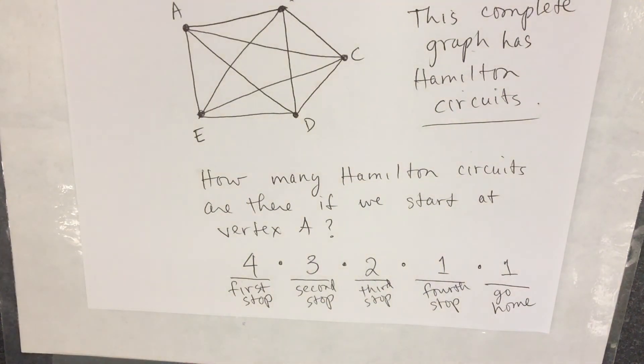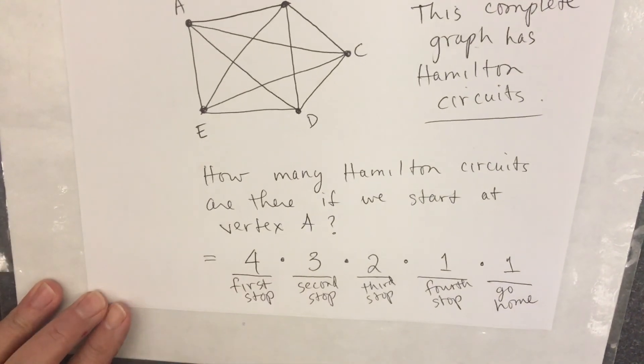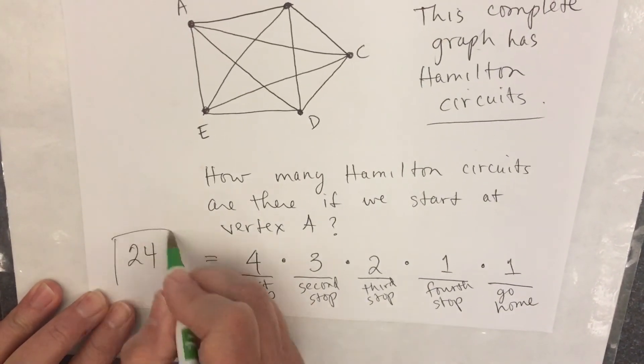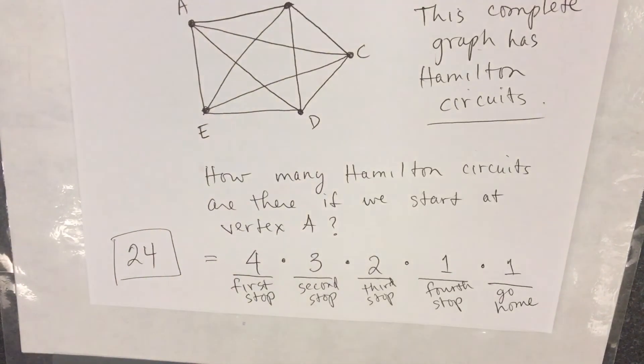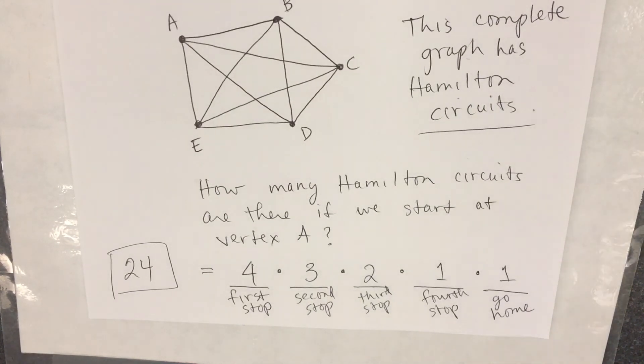This is the same as four factorial. What does that equal? 24. 24 Hamilton circuits for a complete graph that has five vertices.